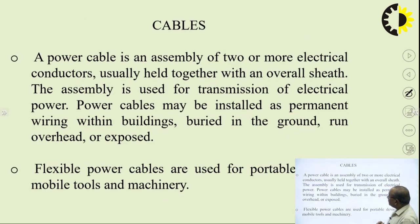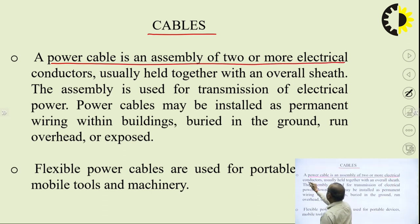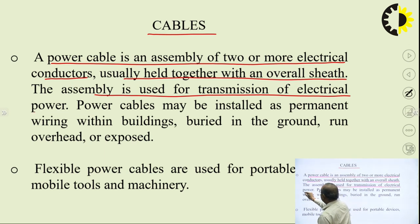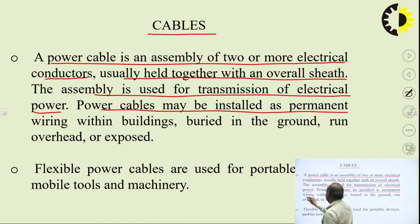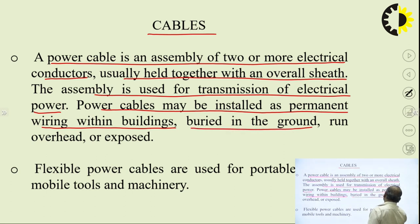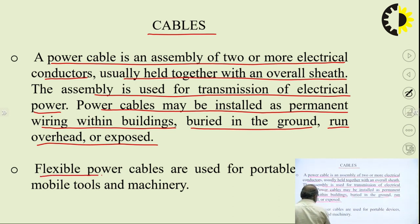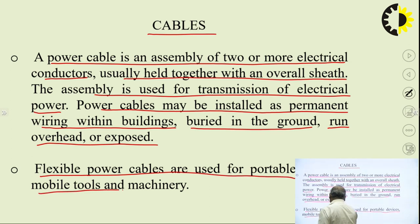Next we have cables. A power cable is an assembly of two or more electrical conductors, usually held together with an overall sheath. This assembly is used for transmission of electrical power. Power cables may be installed as permanent wiring within buildings, or buried in the ground, or run overhead. Flexible power cables are used for portable devices, mobile tools, and machinery.